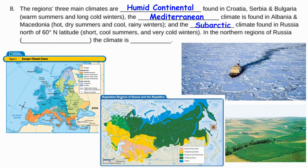There is also a sub-Arctic climate found in Russia north of 60 degrees north latitude, with short, cool summers and very cold winters. In the northern regions of Russia, we have an additional climate zone — Novaya Zemlya has a polar climate.